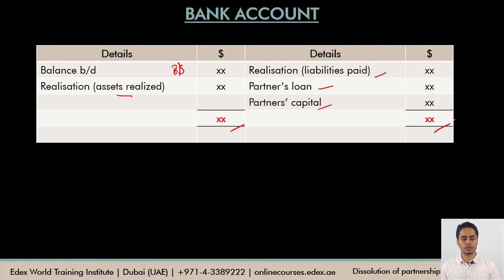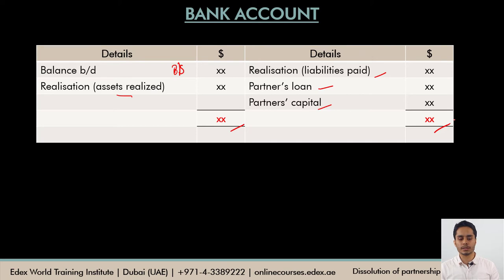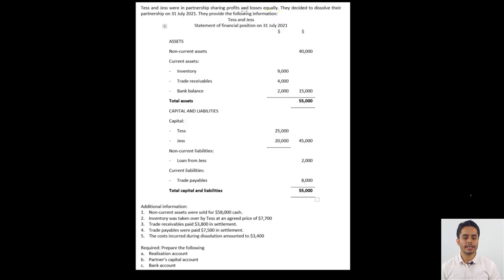Now let's have a look at a solved example. After this example, I'm sure you will be able to solve other questions on dissolution from your past papers or any other book. In our example, two partners are there — Tess and Jess — sharing profits and losses equally. They decide to dissolve their partnership on 31st July 2021.